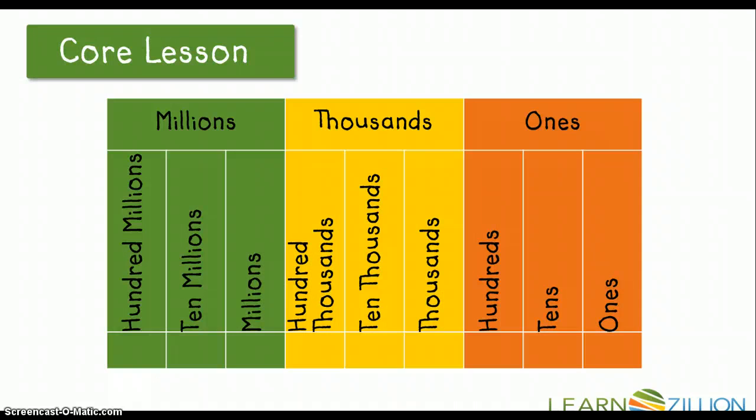Let's take a look at a place value chart again. Each section of the place value chart is called a period. We have the ones period, the thousands period, and the millions period. Within each period, we have three sections. So in the ones period, we have our ones. Those are our units. We have a tens and hundreds.